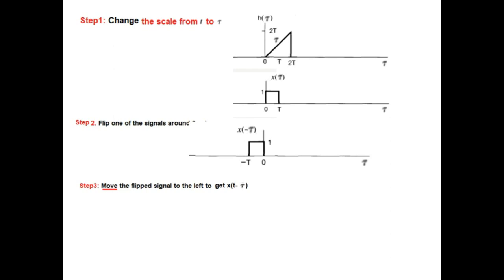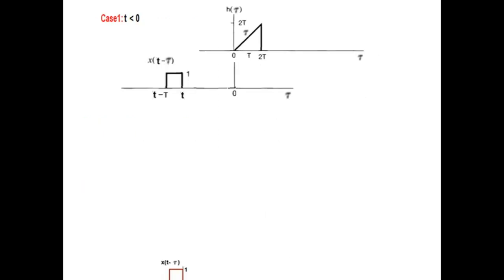Move the flipped signal to get X(t−tau). We are adding T here, so the positions will be t and t minus capital T — we have moved it to the left. If you assume it to be mounted on a trolley it will be much easier to comprehend. The positions are t and t minus capital T, and now we pull the trolley gradually until it starts overlapping.